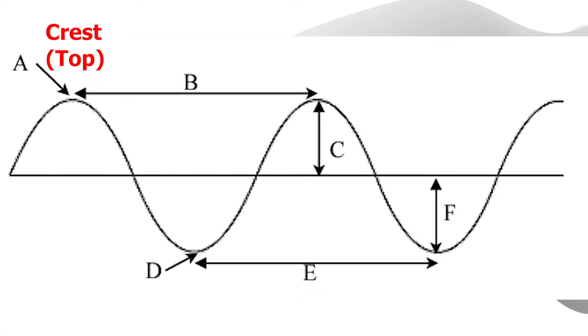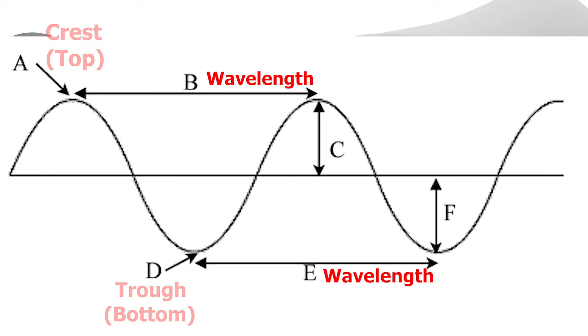A is the crest or top of the wave. D is the trough or bottom of the wave. B and E represent the wavelength or how far it is between crest to crest or trough to trough of the wave.